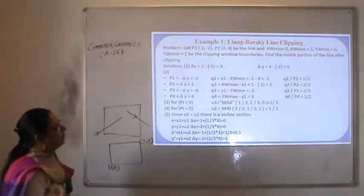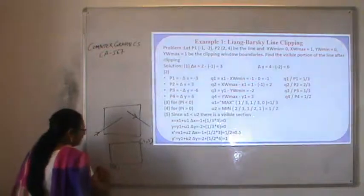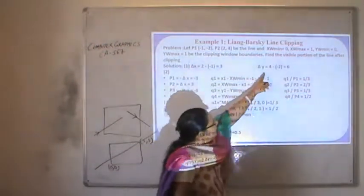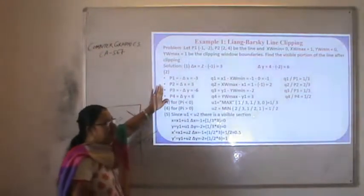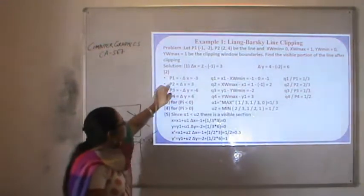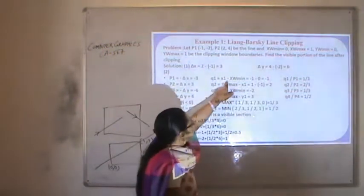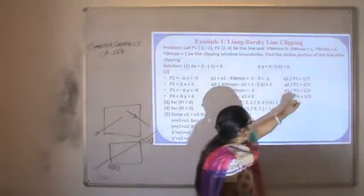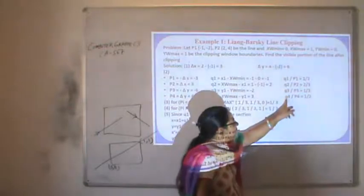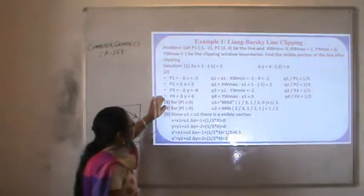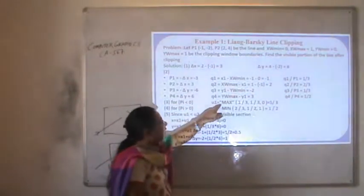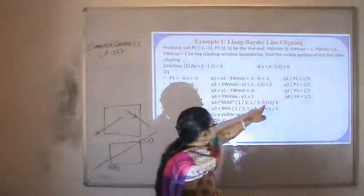We have to find out whether the line p1, p2 lies on the clipping window. First, calculate delta-x = x2 minus x1 and delta-y = y2 minus y1. Then calculate all values of p_k and q_k from k=1 to 4. p1 = minus delta-x = minus 3; q1 = x1 minus xw-min = minus 1; r1 = q1/p1 = 1/3. Similar calculations are done for p2, p3 and p4, giving the respective r_k values.